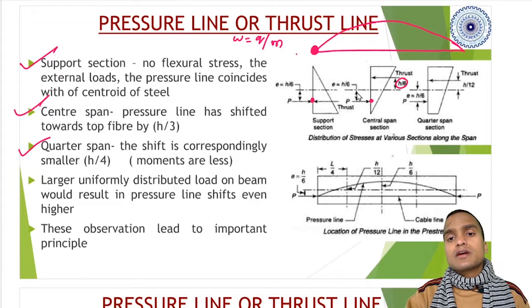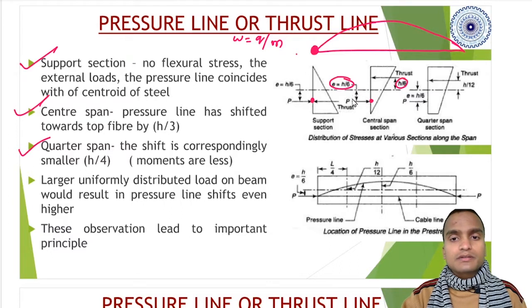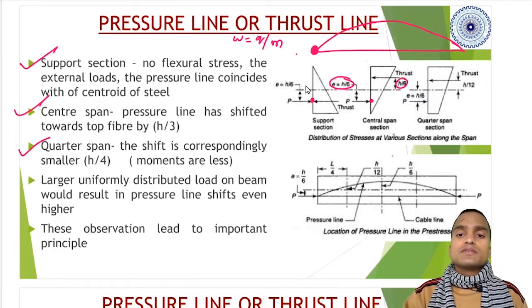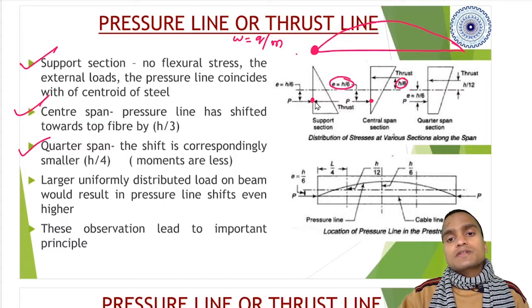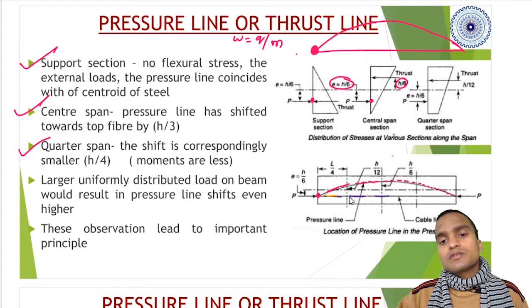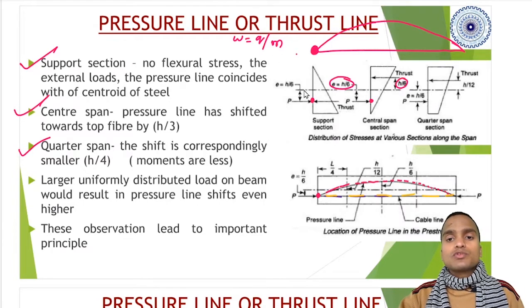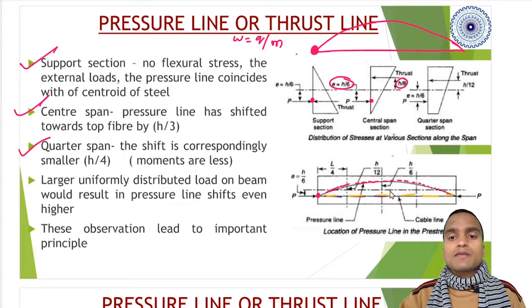Here is the pressure line diagram or thrust line. This is our tendon profile which is straight. At the support, both are coinciding, but as we go towards the span, the pressure line has shifted towards top fiber by h by 3. This value is the distance between the tendon and pressure line.